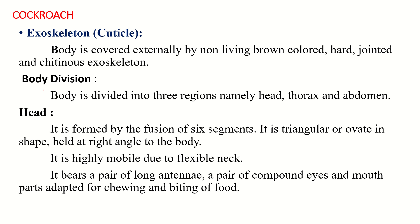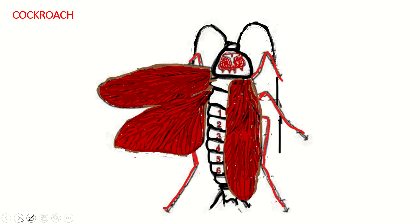The body of this organism is covered externally by a non-living, hard, and jointed chitinous exoskeleton. The body is enveloped by this exoskeleton. The body is divided into three regions: head, thorax, and abdomen.